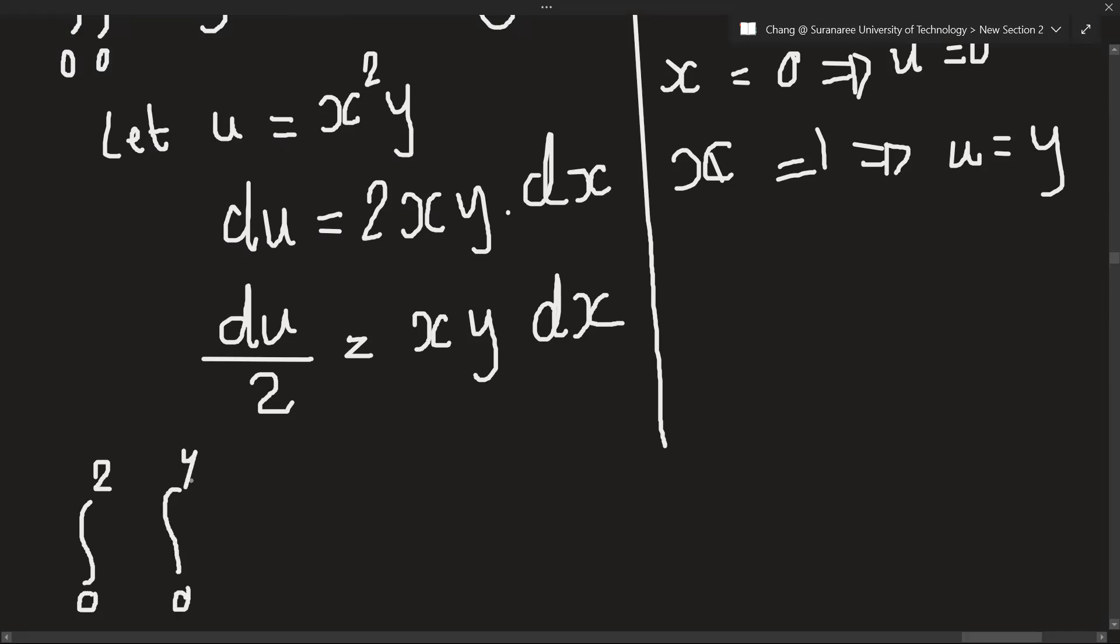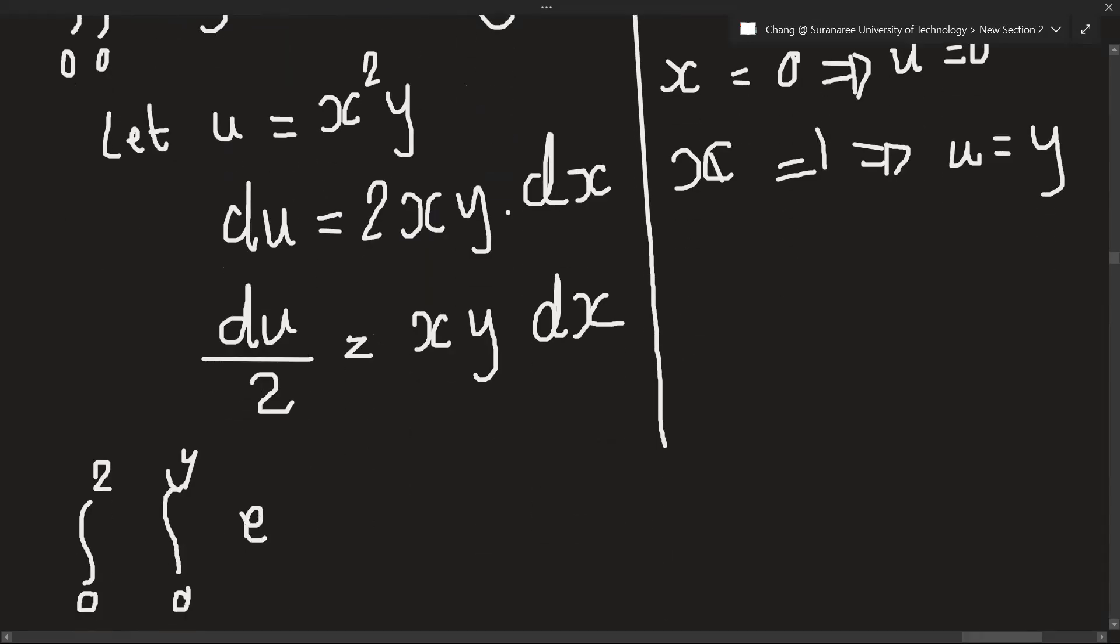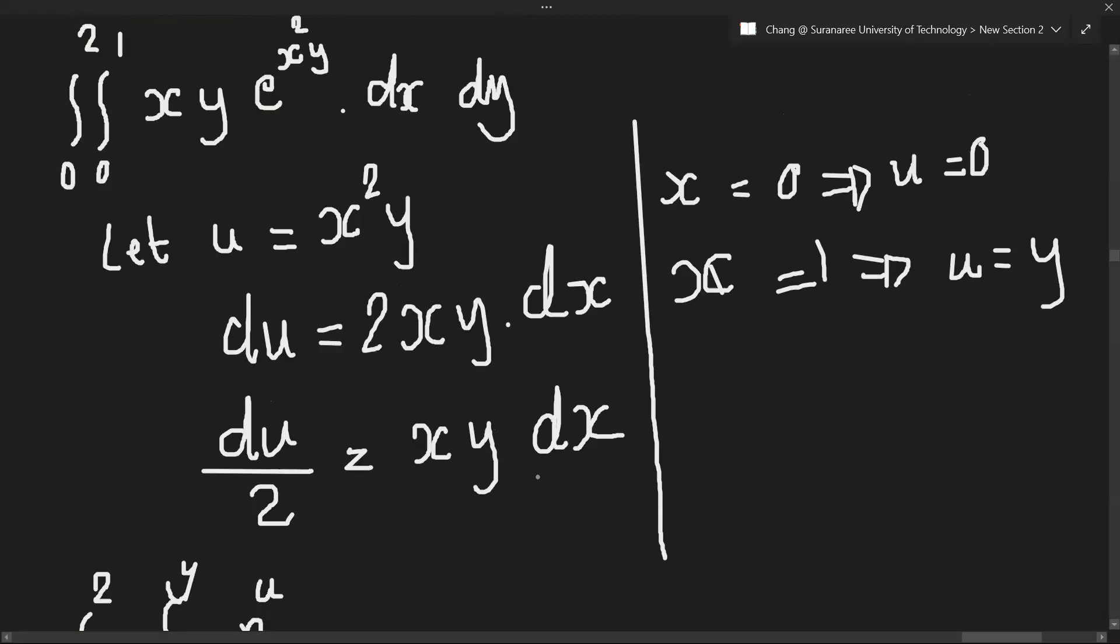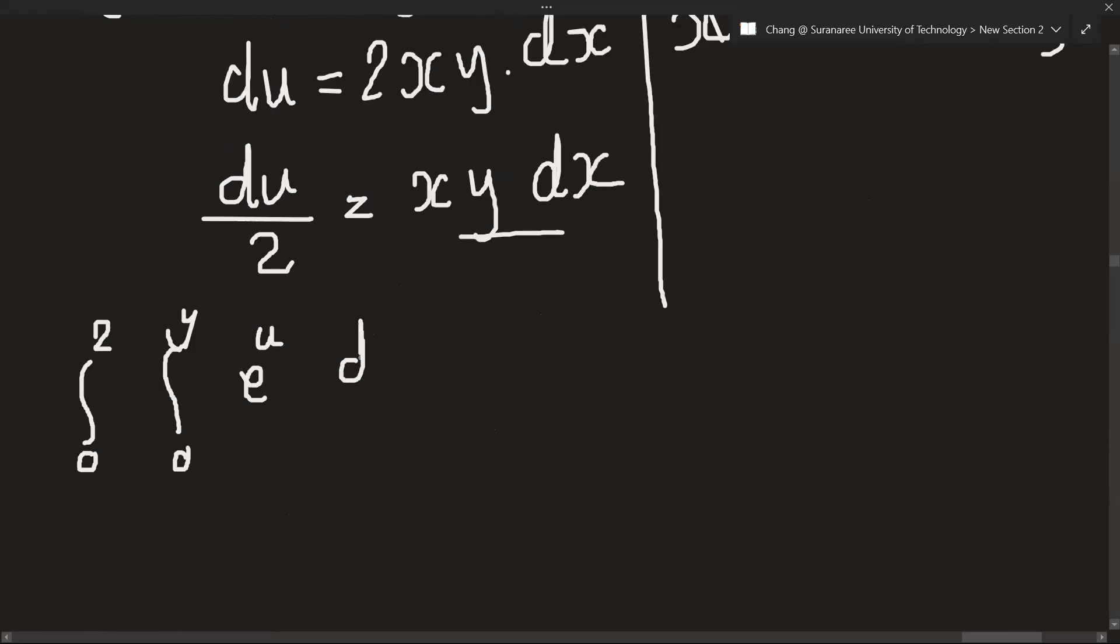So e^u, and xy dx equals du over 2, right? So we can replace xy dx with du over 2. So I will just put one-half in front.